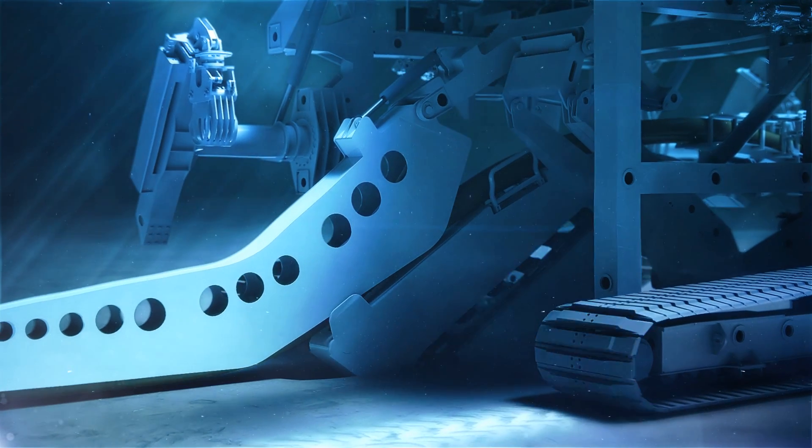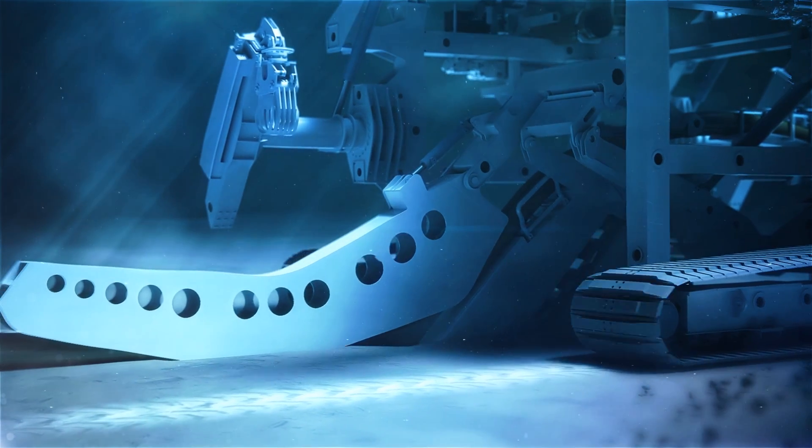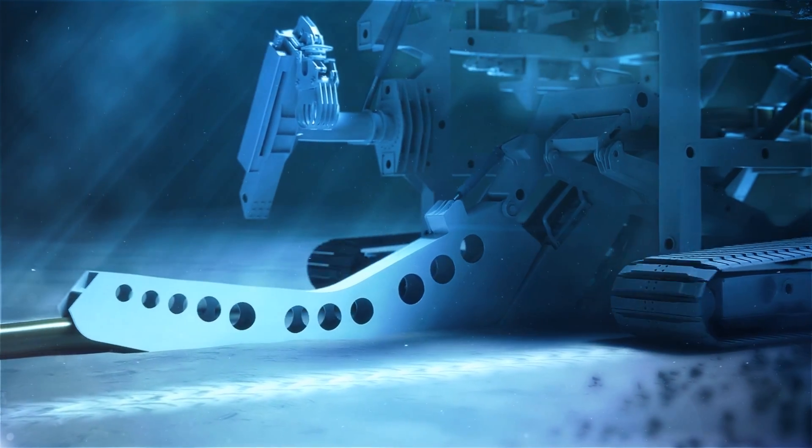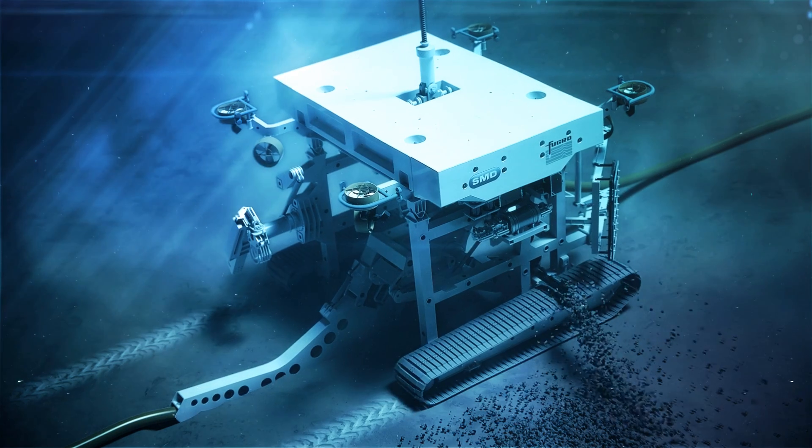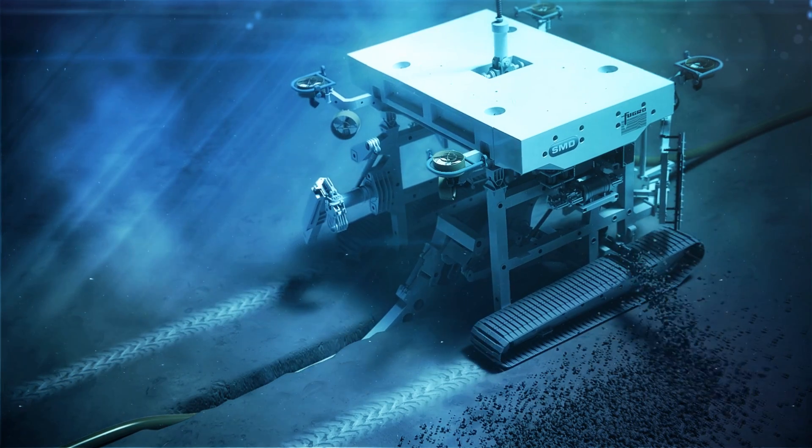In chain cutting mode, a trench depth of up to 2 meters can be achieved. A high-volume dredge pump ensures spoil is transported away from the trencher path.